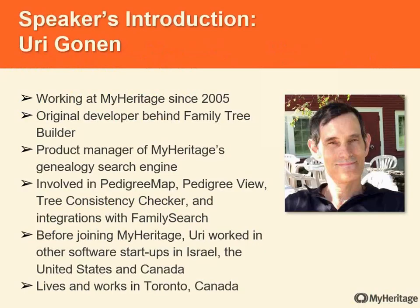Uri Gonan has been working at MyHeritage since 2005, where he took on different challenges and roles in product development and product management. He's been part of the wild journey of MyHeritage from a small startup to a dominant company in the genealogy space. Among his key projects, Uri was the original developer behind Family Tree Builder and the product manager of MyHeritage's genealogy search engine. Recently he was involved in projects such as Pedigree Map, Pedigree View, Tree Consistency Checker, and several integrations with FamilySearch. Before joining MyHeritage, Uri worked in software startups in Israel, the United States, and Canada. He now lives and works in Toronto.